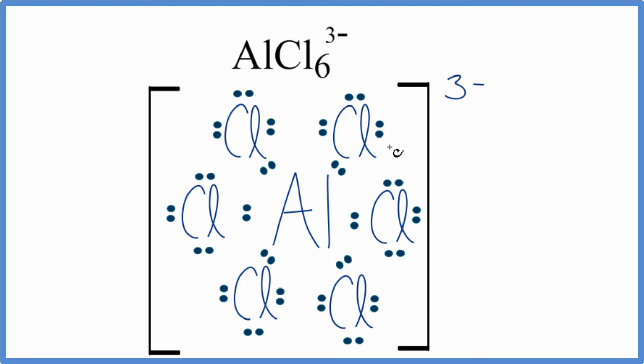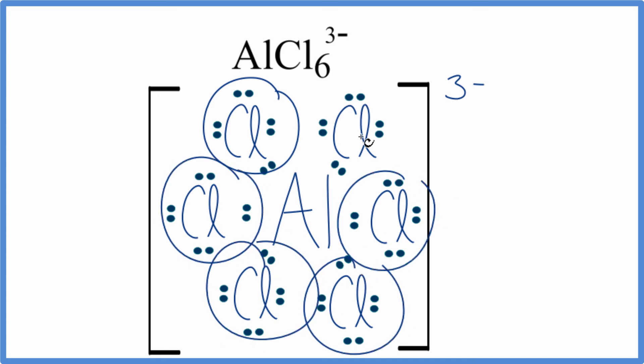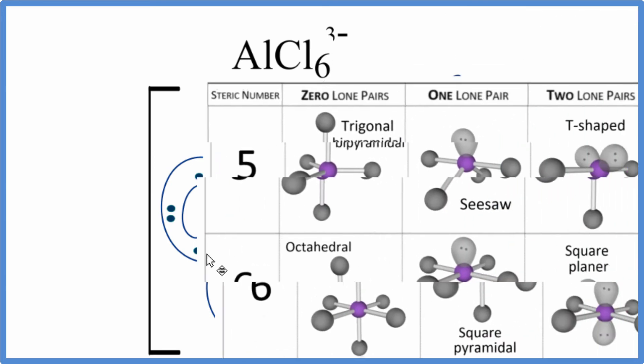If we wanted to know the molecular geometry for this compound here, we can see we have one, two, three, four, five. We have six things attached to that central aluminum and no lone pairs. So if we look at this chart here,